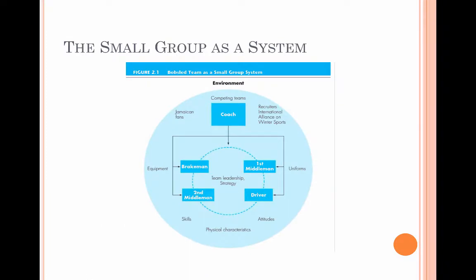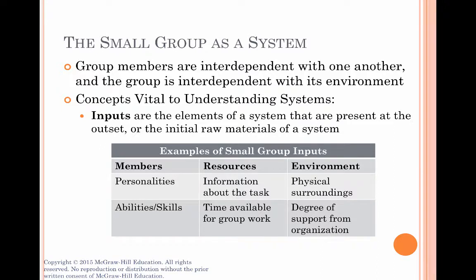Let's use the Jamaican bobsled team as an example of a system. A group is made up of several elements — in the case of the bobsled team, that would be people — that influence one another, but outside influences affect the group as well, and the group can also affect its environment. The different people in this group with their unique abilities and characteristics had a great effect on the group as a whole. The team's plan, the coach's leadership skills, personal interactions within the group — all of that affected it. Finally, the effect of their environment, both in Jamaica as they were practicing and in Calgary, and all the things they had to face there. And of course, they had a major effect on the people in their homeland as well as the entire Olympic community. So the bobsled team was interdependent with one another, and the group is interdependent with its environment.